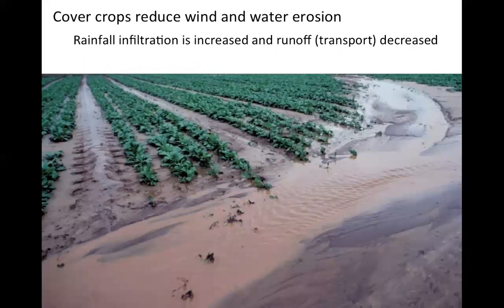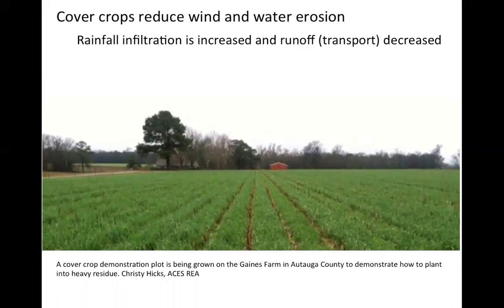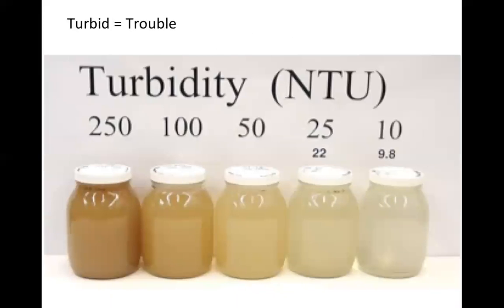Getting back to losing soil — topsoil and the carbon that we build is so valuable to plants, and we absolutely want to protect that and not have it leave a farm and be transported away from those plants and that important topsoil layer. There's been a lot of work done by our extension teams looking at that benefit for promoting cover crops and conservation systems on farm — again, increasing the infiltration and decreasing the potential for turbid or sediment-laden waters to leave a farm.